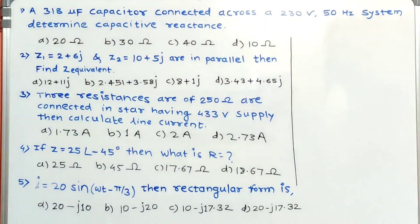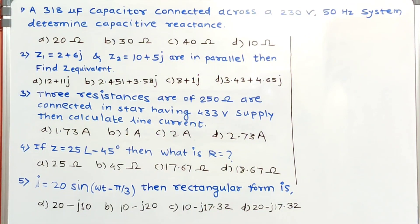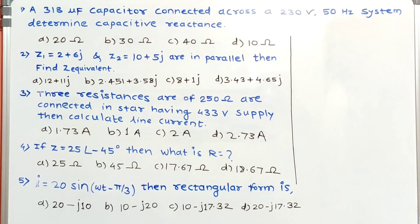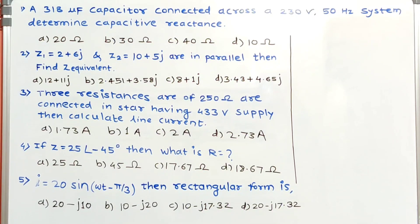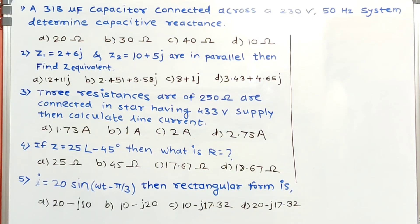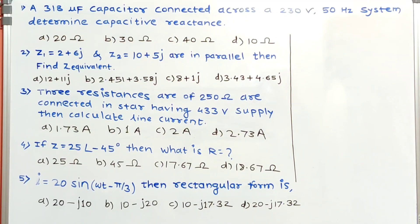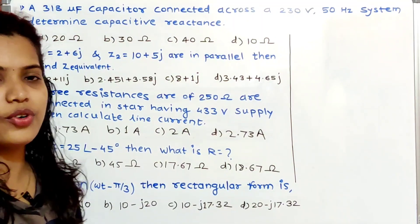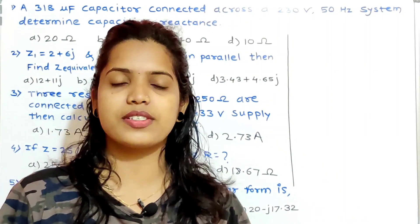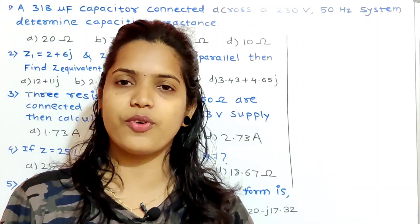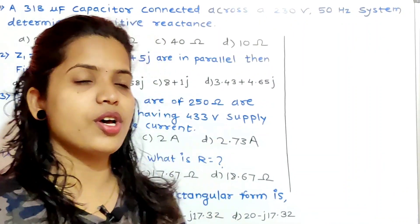Problem number one: a 318 microfarad capacitor is connected across a 230 volt, 50 hertz system. Determine the capacitive reactance. Before solving, you must remember all the formulas which are already discussed in our lectures.